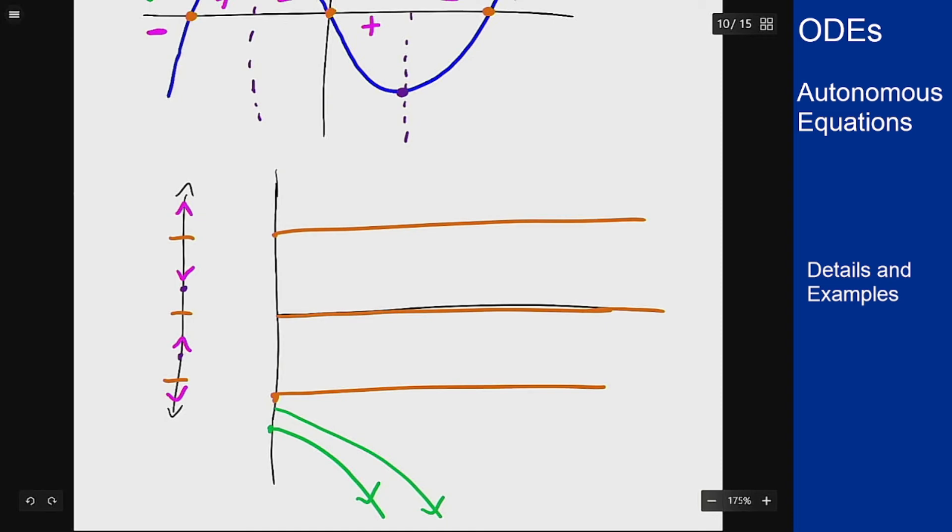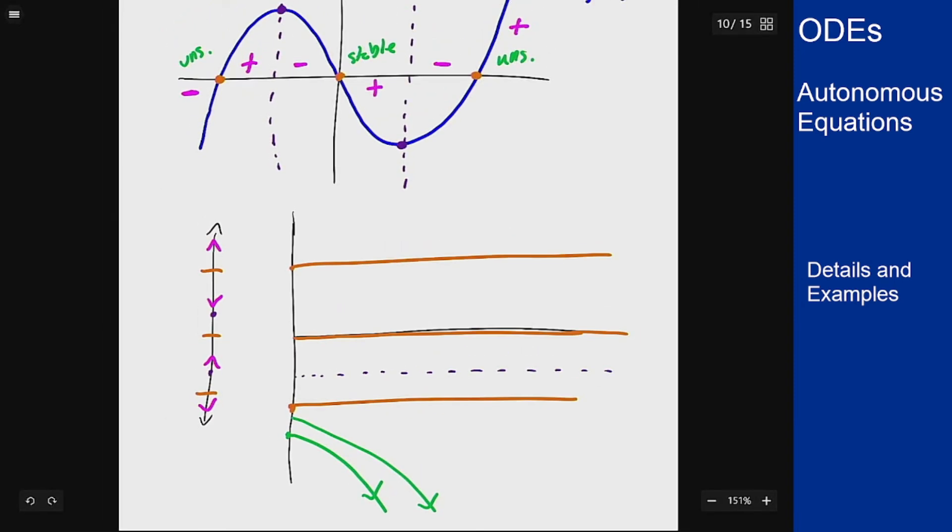Now between the two we have this line here where once we cross that line we switch concavity. Below that line we're in this region here, so we're concave up, and above that line we are concave down. So if we start here we're going to be concave up until we hit that line, that's going to be an inflection point, and we switch to being concave down. If we start up here we're just always concave down, increasing but concave down.